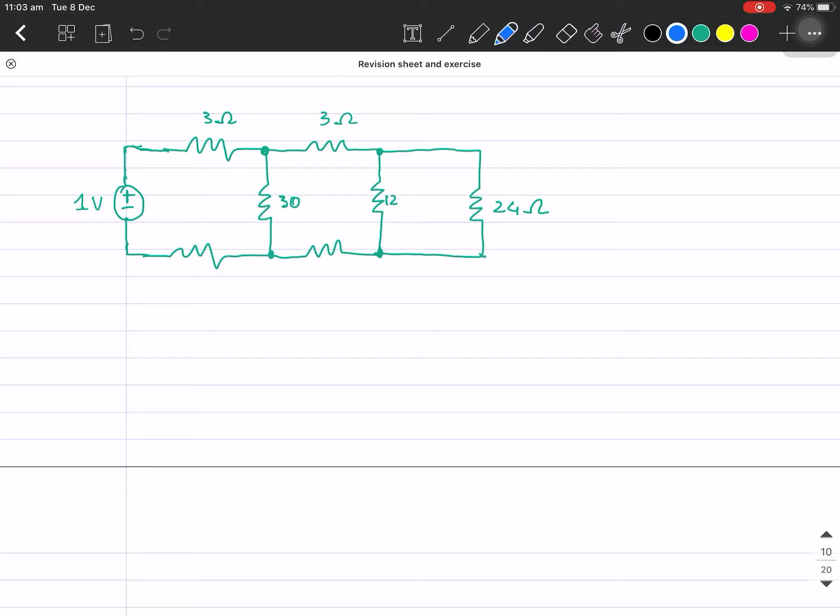Okay, so now we're going to use mesh analysis to identify and find the mesh current and branch current of this circuit. First thing first, we're going to need to identify and label mesh currents, and then we're going to write the branch current in terms of mesh current.